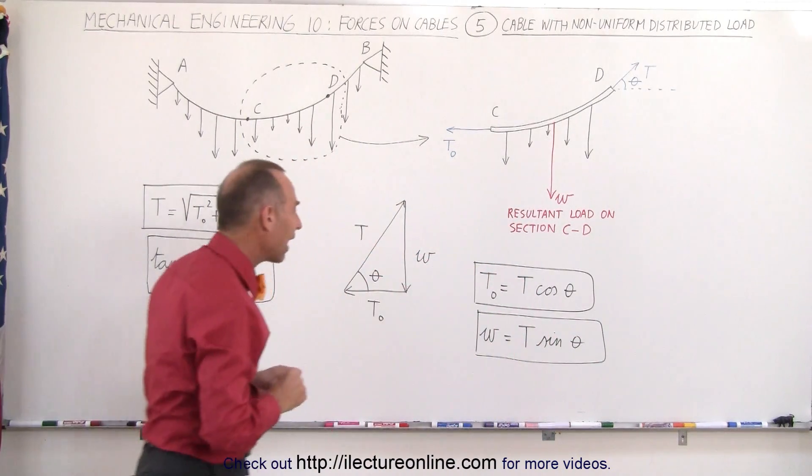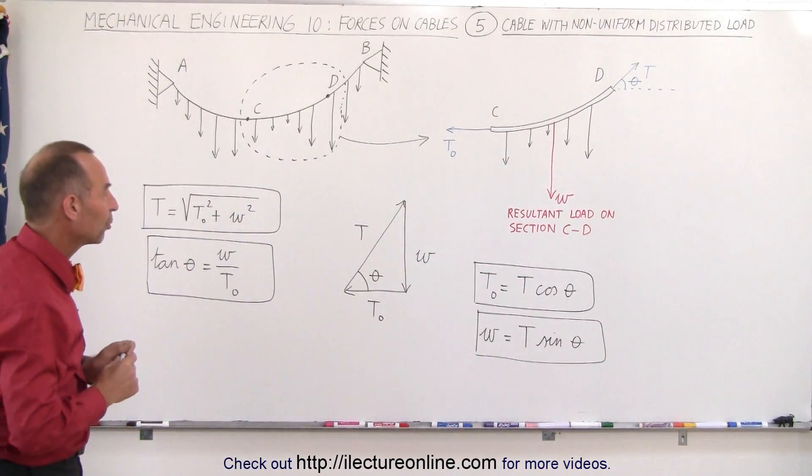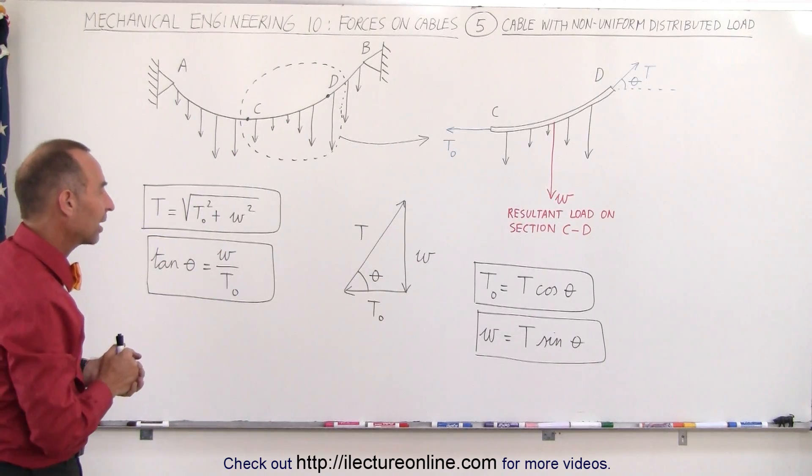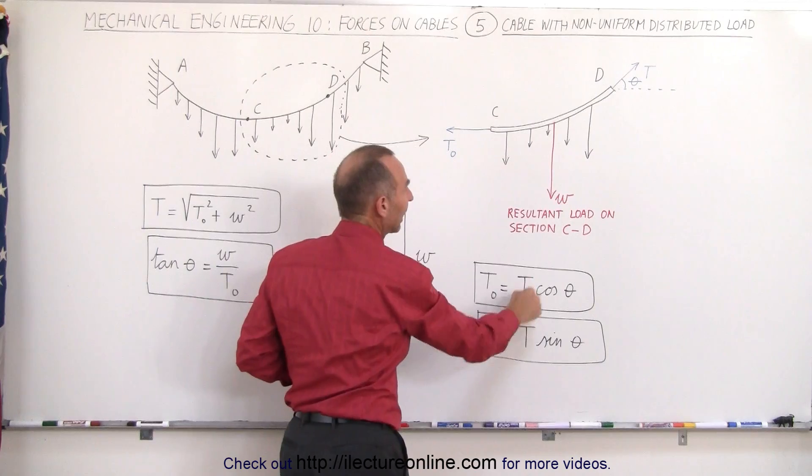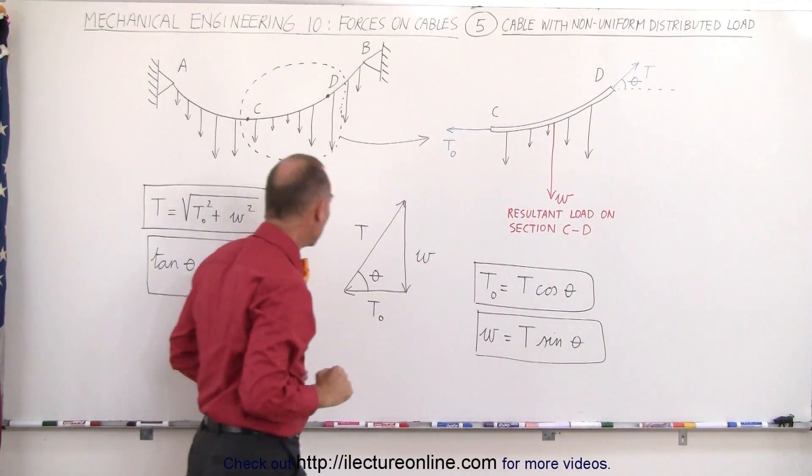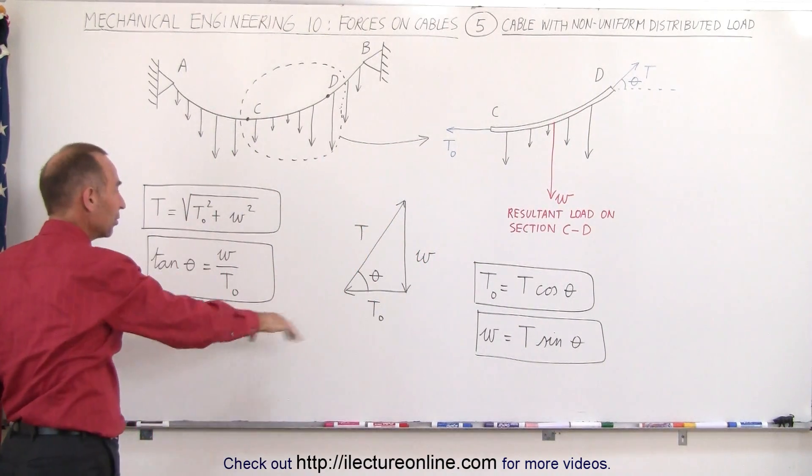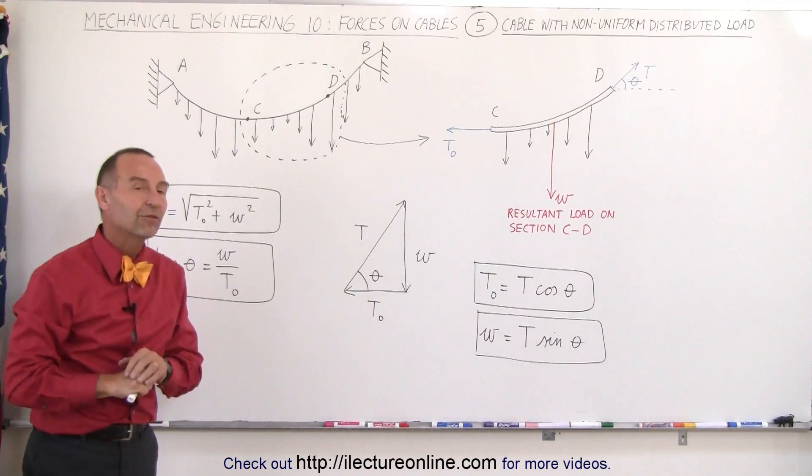So here you can see that we have some various relationships between the resultant load on the section of cable, the tension at the very lowest point on the cable, the tension at any point along the cable that we choose, and you can see here that's different ways of expressing these various components.